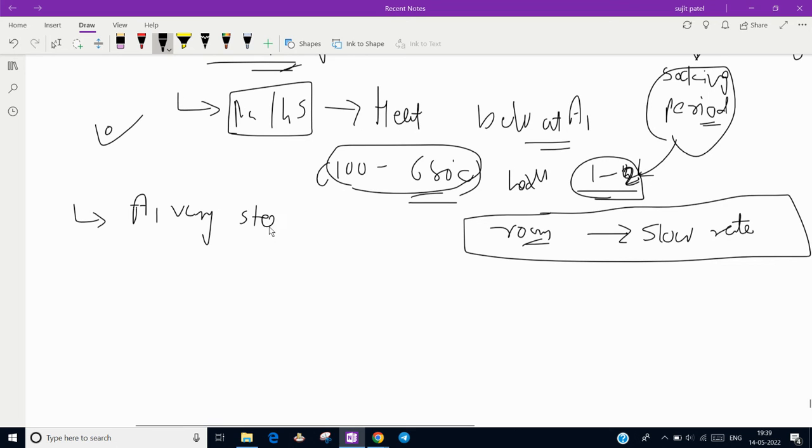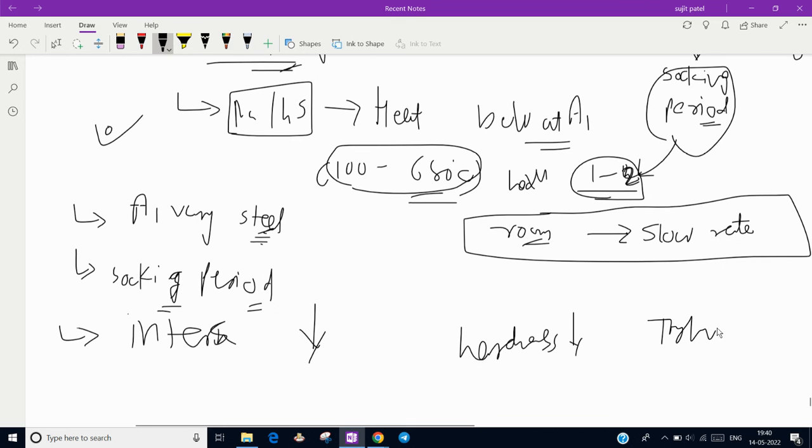The A1 temperature varies with alloying elements and the type of steel. The soaking period also depends on the type of steel. Due to this process, internal stresses are relieved and hardness is reduced. These are the main two benefits, and toughness is increased.